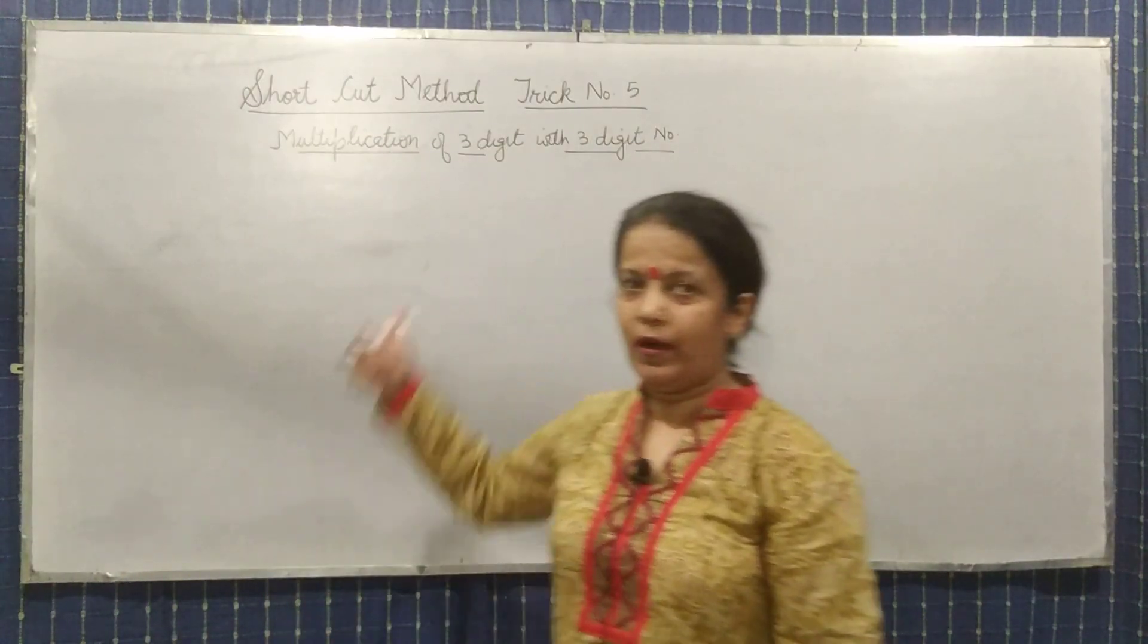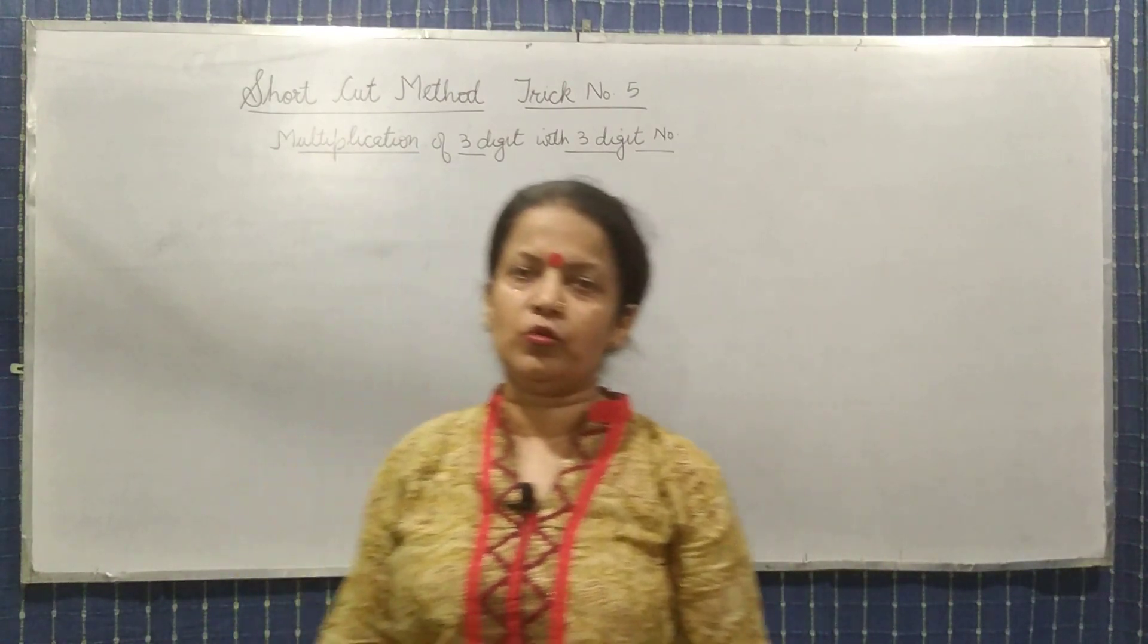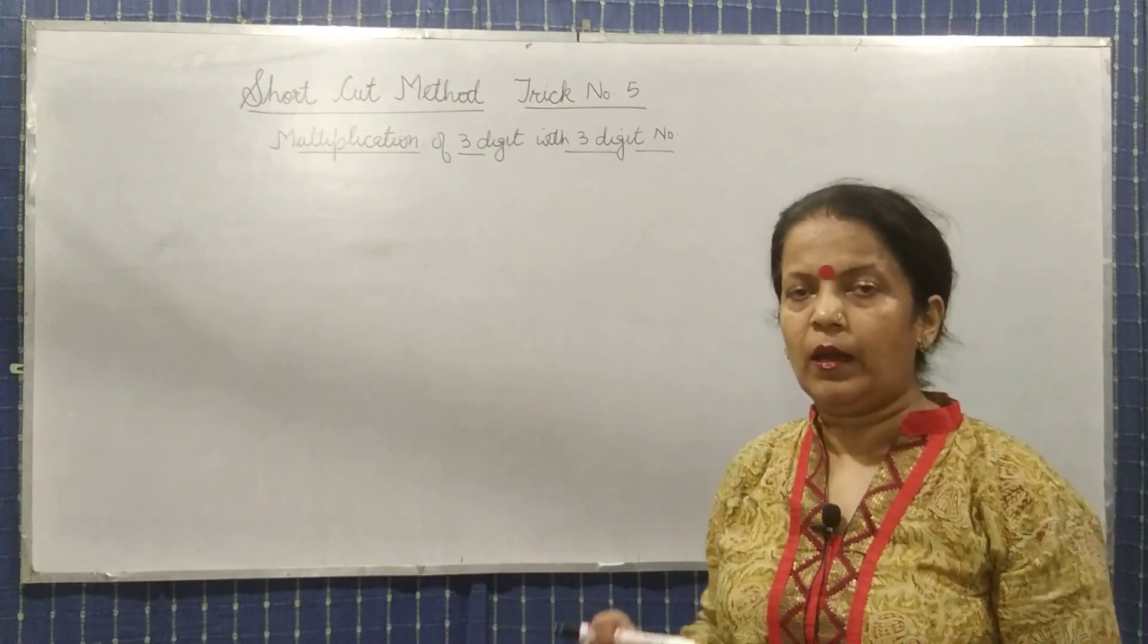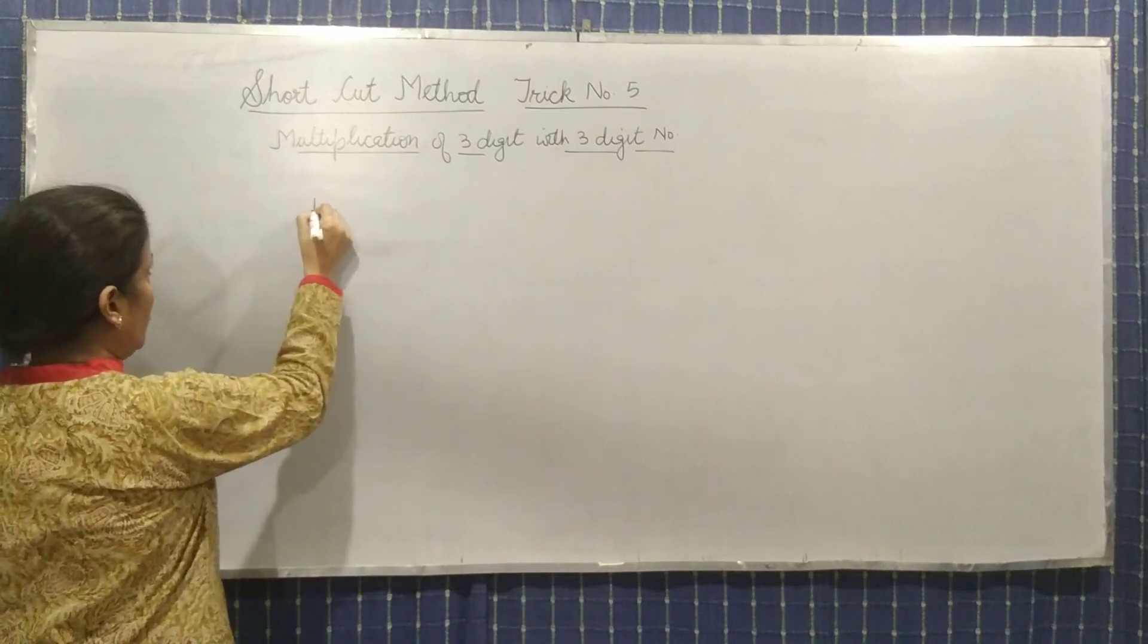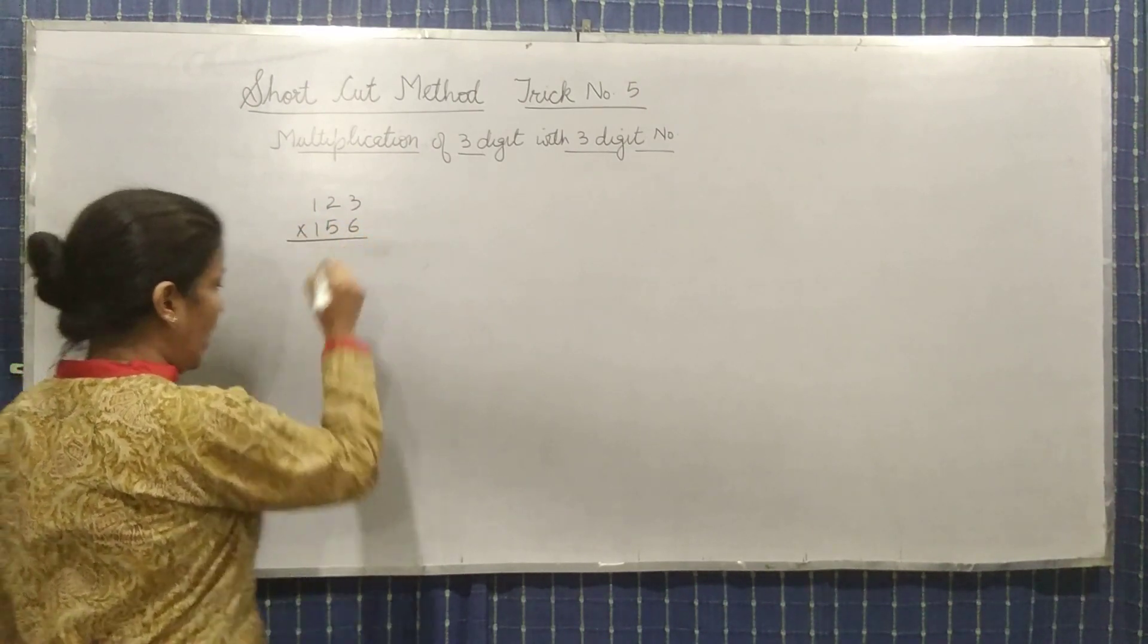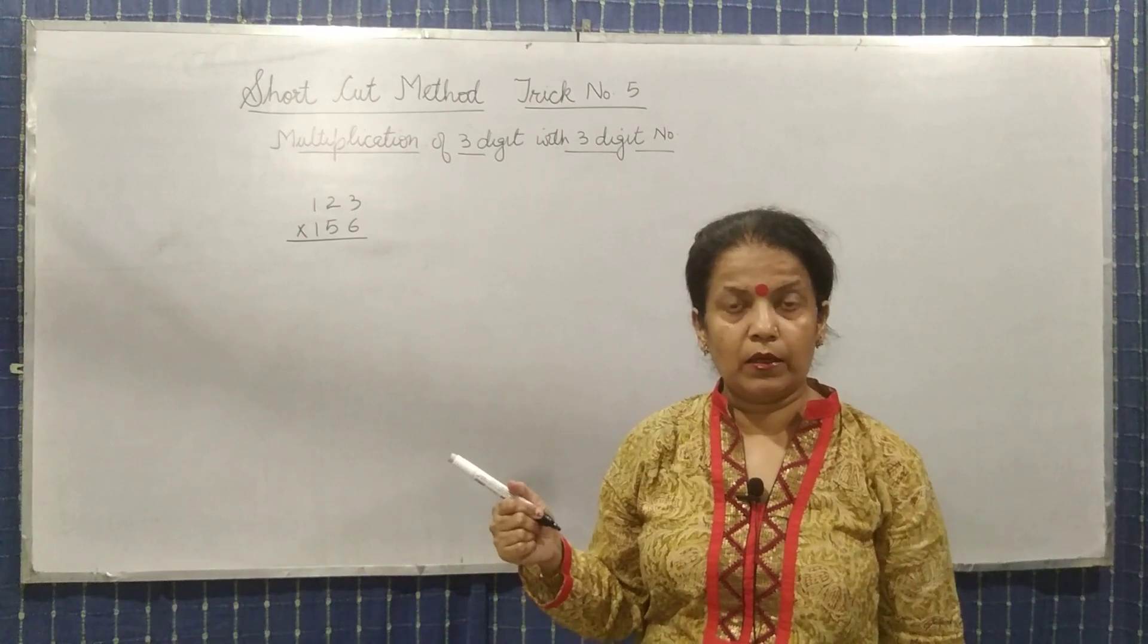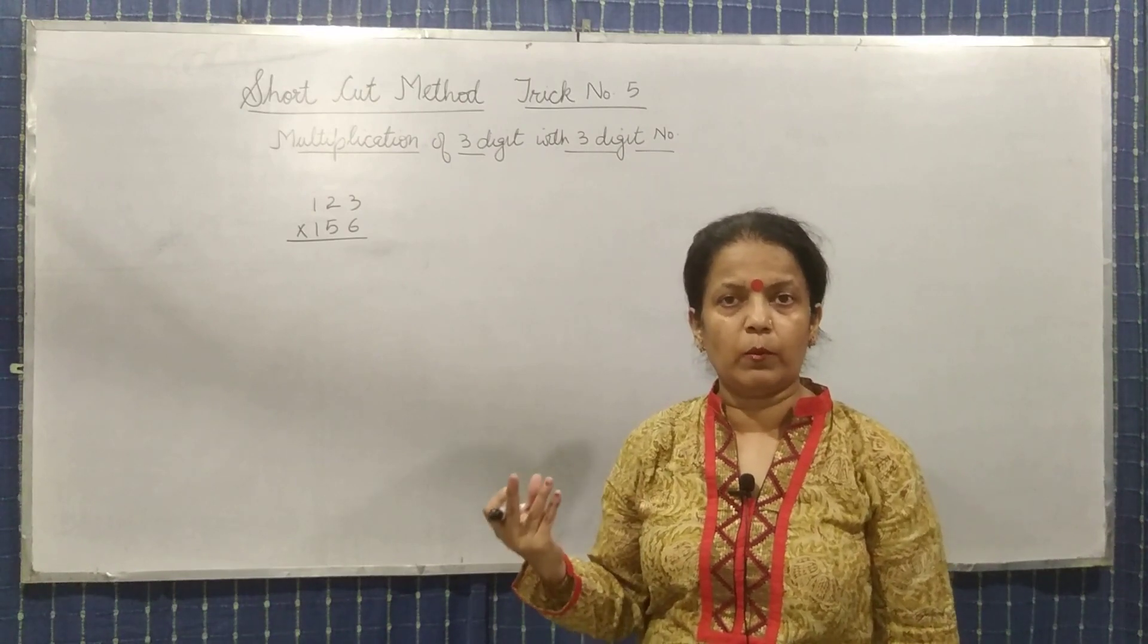Welcome back with trick number 5. In trick 5, we will try to do the shortcut method of 3-digit number with 3-digit number. We'll learn how to multiply 3-digit numbers in one line and within seconds.